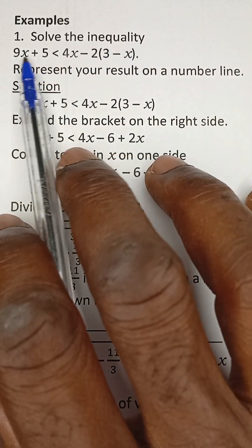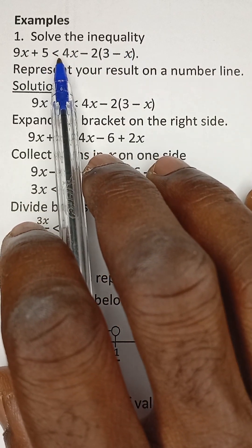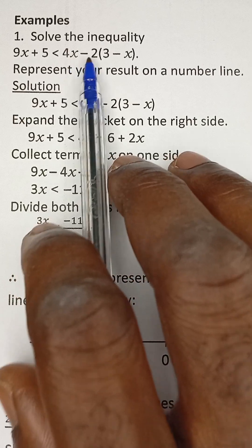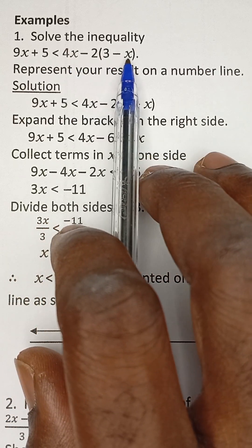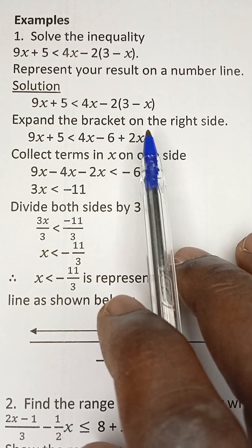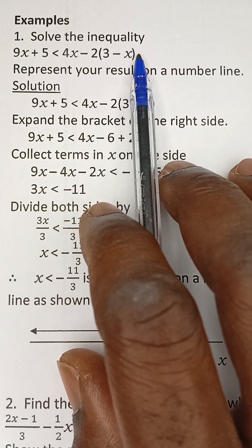Solve the inequality: 9x plus 5 is less than or equal to 4x minus 2 bracket 3 minus x. Now the first thing for us to do is to expand these brackets.